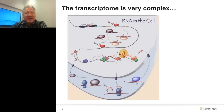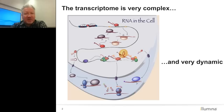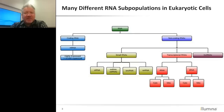Before I get into the technical details about doing RNA-Seq, I want to remind people that the transcriptome inside the cell is very complex. We've learned so much about RNA function over the last 10, 15, 20, 30 years. There are so many different complex functions that RNAs have in the cell, and RNA transcription can be very dynamic — it can go up and down quite a lot and vary from tissue to tissue. RNA-Seq has turned out to be the most specific, unbiased, and sensitive tool for understanding the complexity of the mammalian eukaryotic transcriptome.